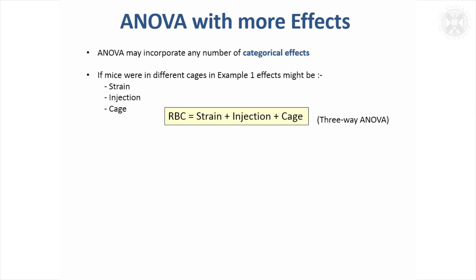That was a two-way ANOVA. You can actually have ANOVA with even more effects. For example, in the first example we looked at where we were looking at the effect of strains of mice and the injection that was given to them, if those mice had been in different cages, you could allow for that in the same model, which would make the model more efficient. That would then be called a three-way ANOVA, and you can put as many effects as you like into the ANOVA model.